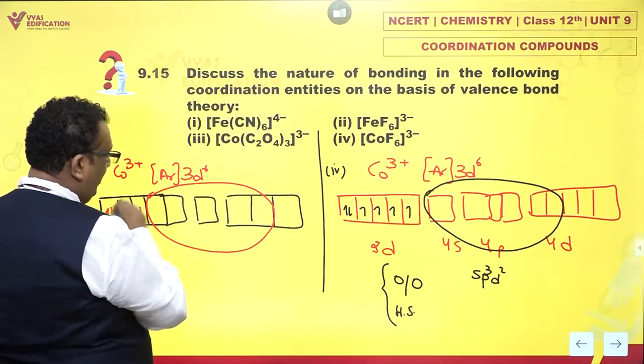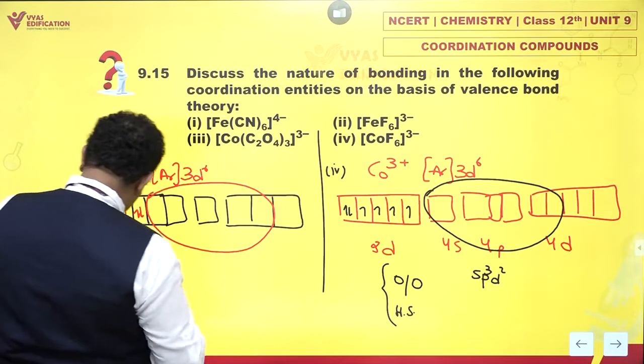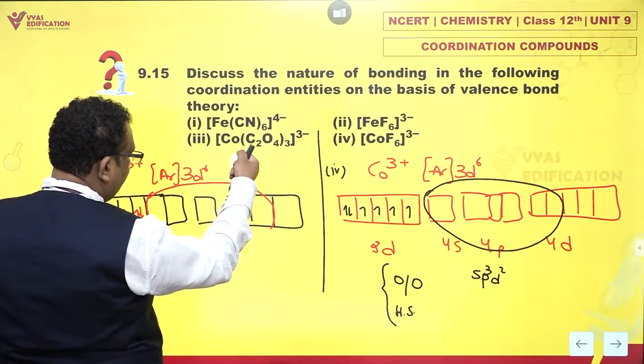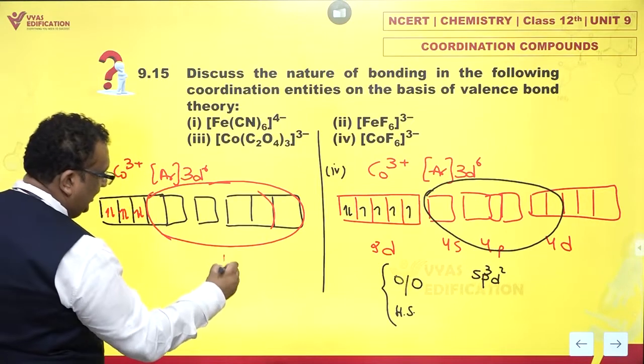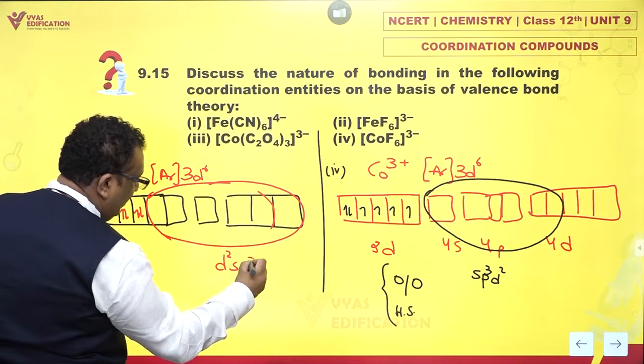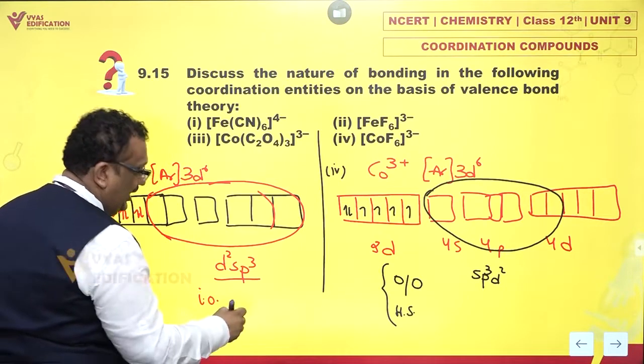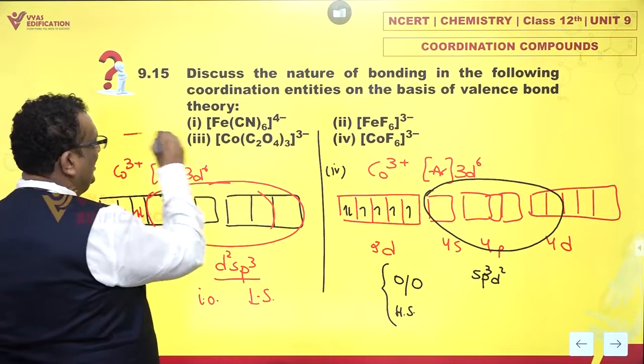And the moment they pair up, I need to redraw a little. It has to be a bigger circle. So I get D2SP3 hybridization. This is inner orbital. And this is a low spin complex.